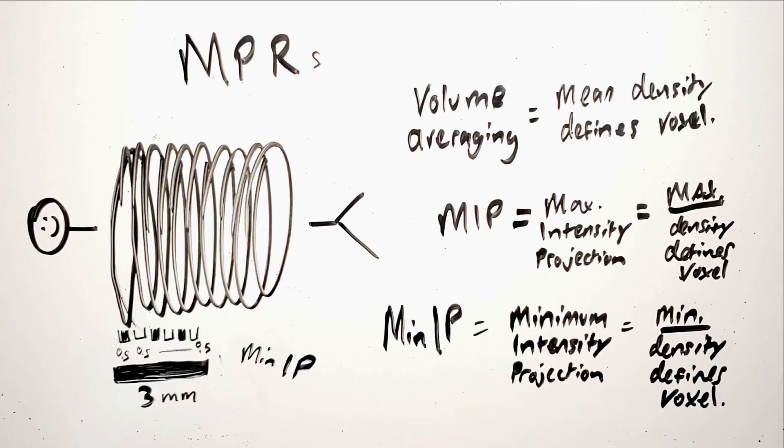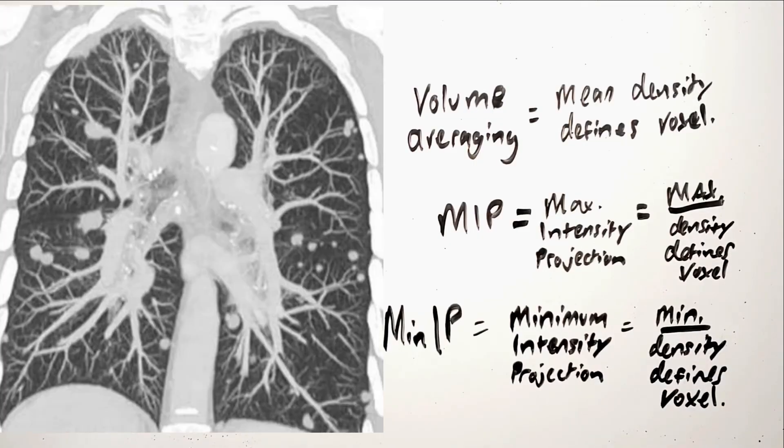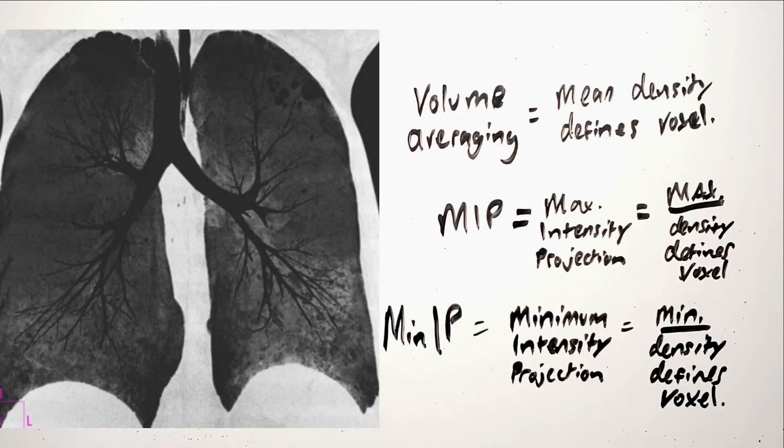While volume averaging is the most common mode of rendering image reconstructions, MIPs and to a lesser extent MIN-IPs do have certain applications in which they can be useful. For example, if you're looking for tiny lung nodules, a MIP may be used to bring out and highlight nodules which are smaller than your 2mm slice, for example. On the other hand, if you want to only look at the airspace in the lung, a minimum intensity projection will give you a very black image to see airspaces without obstruction from lung tissue which might otherwise occupy the same voxel.